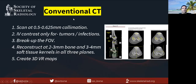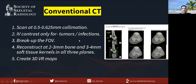As part of conventional CT, as you do routinely, you scan at thin collimations. IV contrast is only used for tumors or infections. Generally, it's good to break up the field of view between the upper and lower parts of the extremity so there's not a lot of blank space when you reconstruct. People reconstruct at 2–3 mm in bone algorithm, which is high frequency, and 3–4 mm in soft tissue kernels in all three planes.